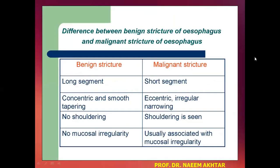There are certain differences between benign stricture and malignant stricture of the esophagus. In benign stricture, the stricture usually involves a long segment of the esophagus, whereas in malignant stricture the segment involved is usually a short one. The benign stricture is concentric and smooth tapering, whereas in malignant stricture the narrowing is eccentric and irregular.